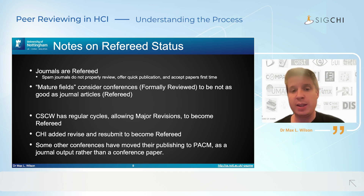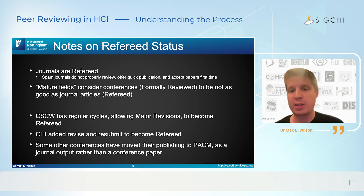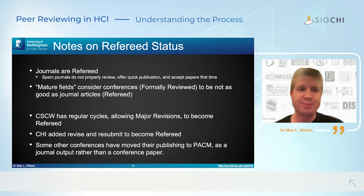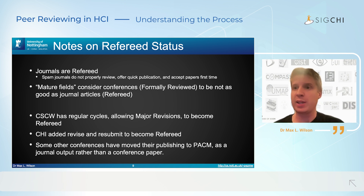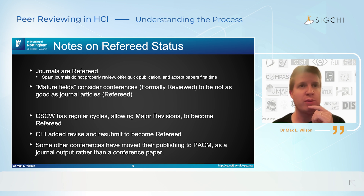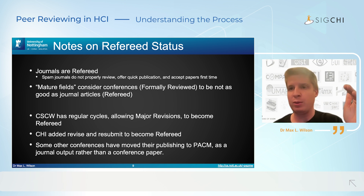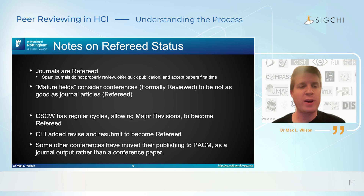We've also seen some HCI conferences move to publishing outcomes in the Proceedings of the ACM — PACM — to produce a journal output rather than a conference output. What we're seeing in HCI at the moment is that venues are trying to upgrade and add more formality to their processes in order to get more recognized levels of publishing. As a reviewer, knowing whether you're reviewing for something aiming at refereed level helps you judge the level of formality to apply in your review.